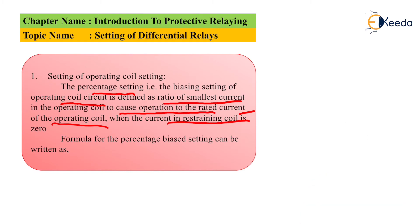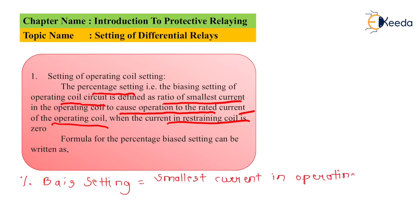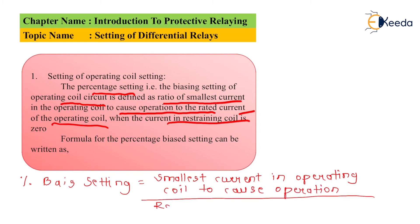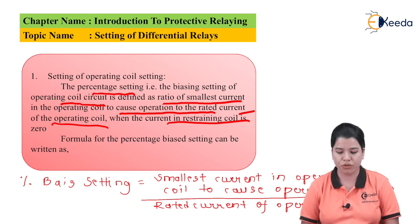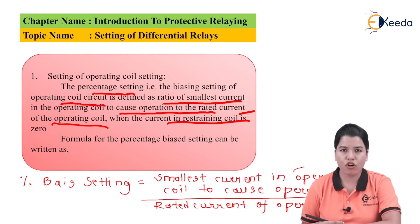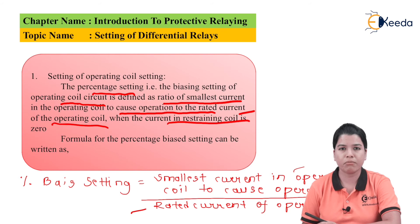The formula can be written as: percentage bias setting is equal to the smallest current in the operating coil to cause operation, divided by the rated current of the operating coil, multiplied by 100.